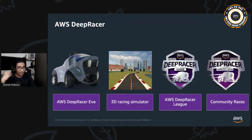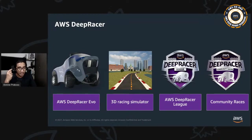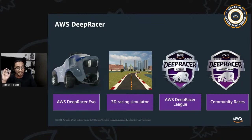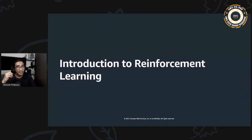I want to reiterate — you can start learning right now by logging into the AWS DeepRacer console. You don't need to have the physical device. Now let's lay a foundation by covering the basics of reinforcement learning.